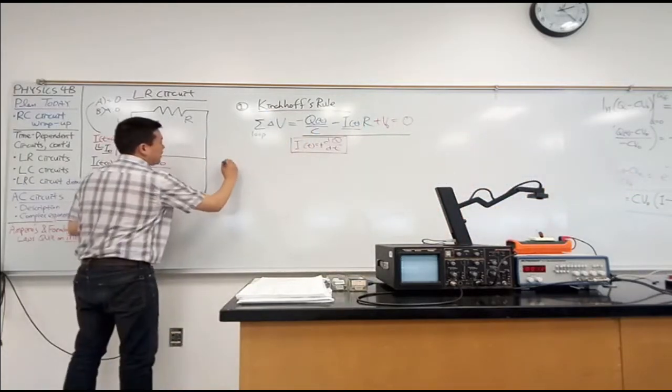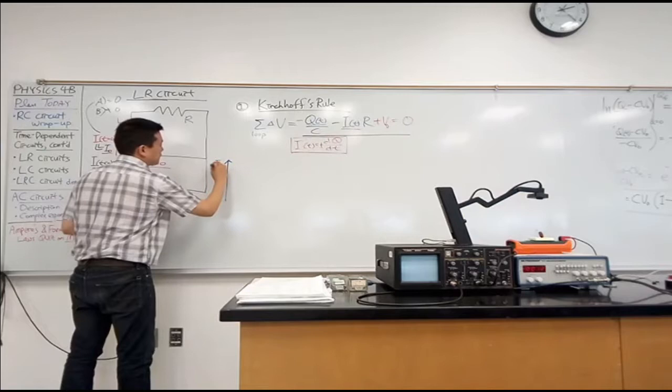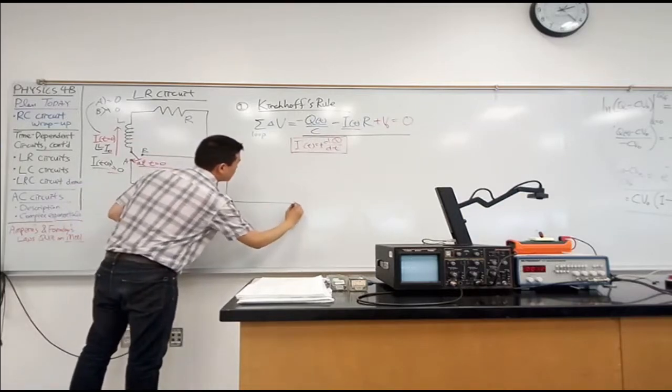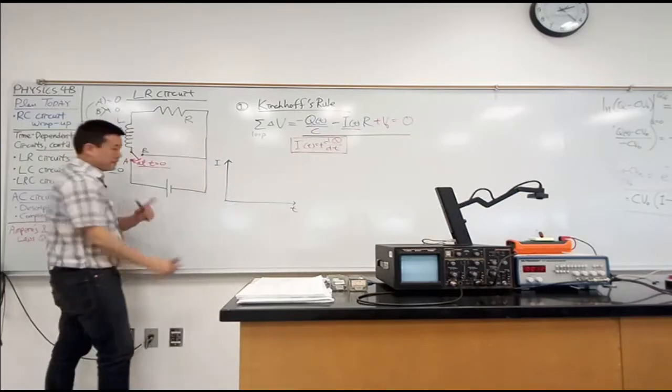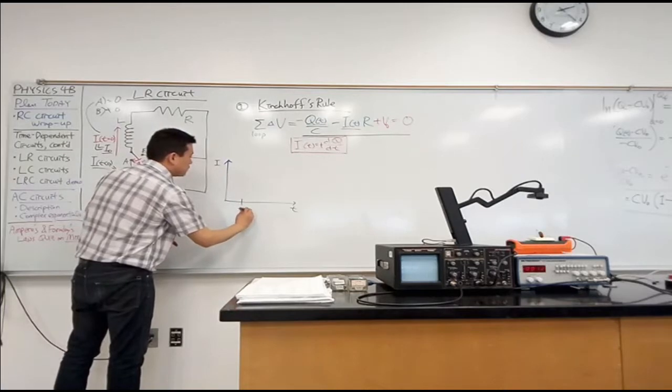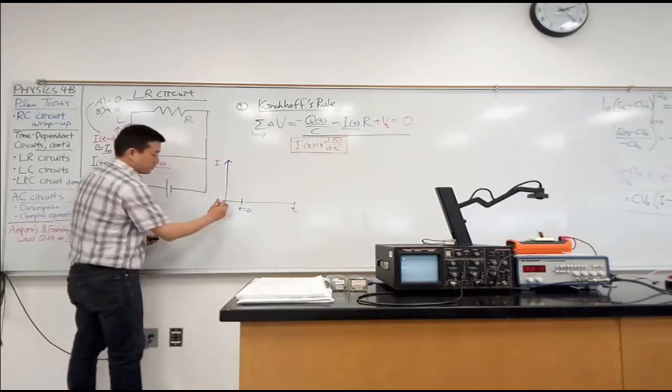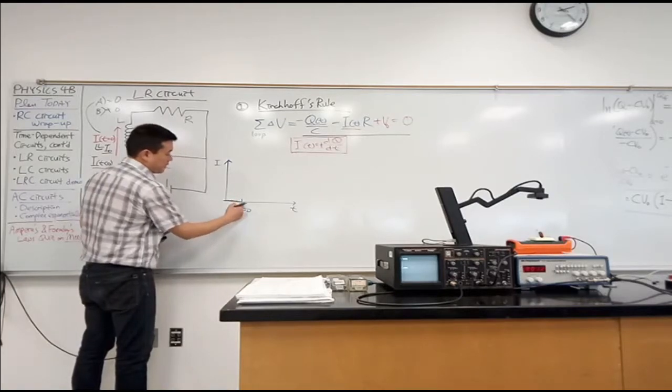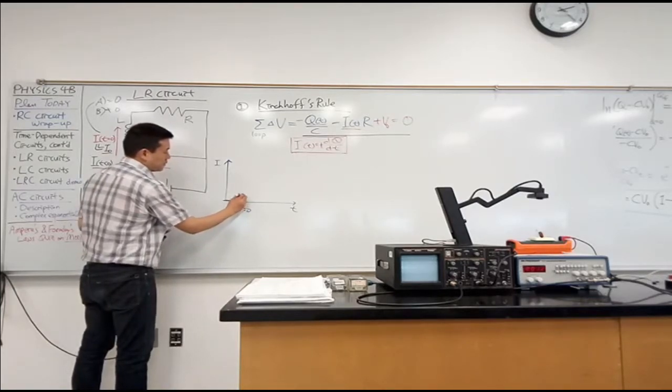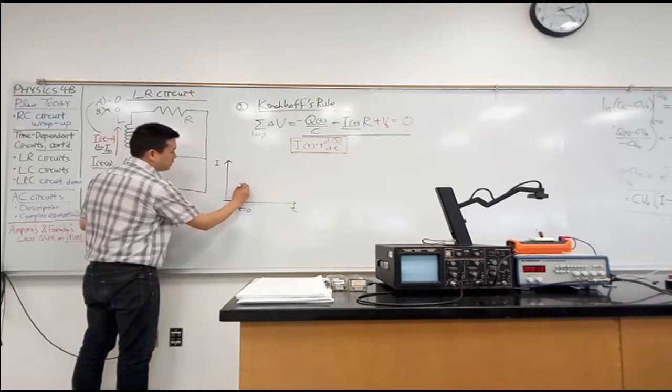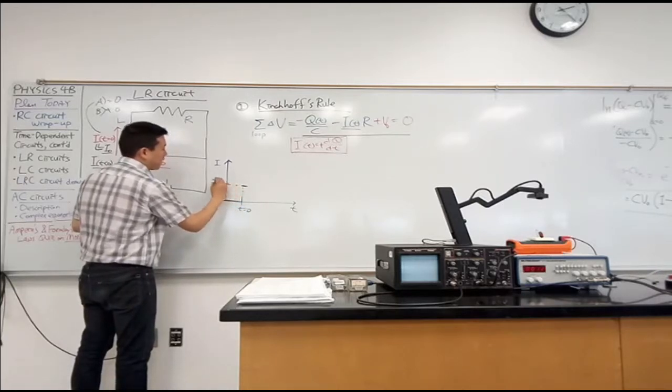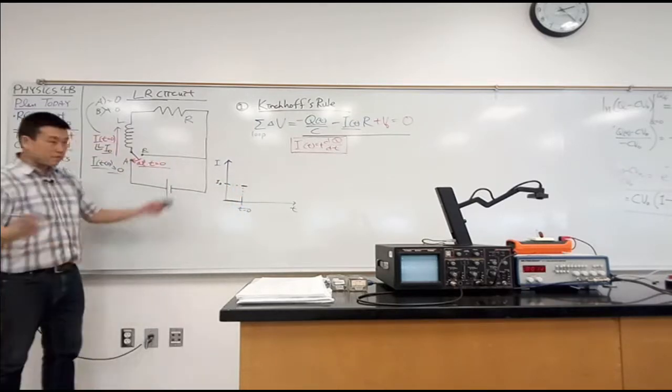All right, so I want to go through some consequences of what this means. I feel like it will be helpful to have a plot. So if I plot my current as a function of time, this is what it means. Let me say this point is time equals zero. So my current was zero up until this point.